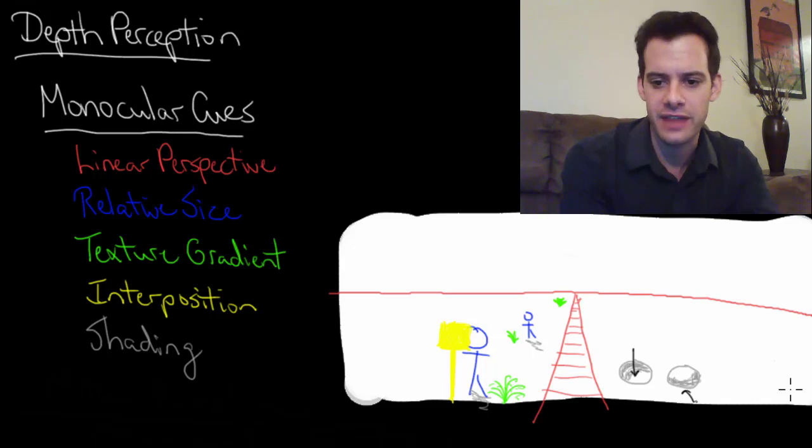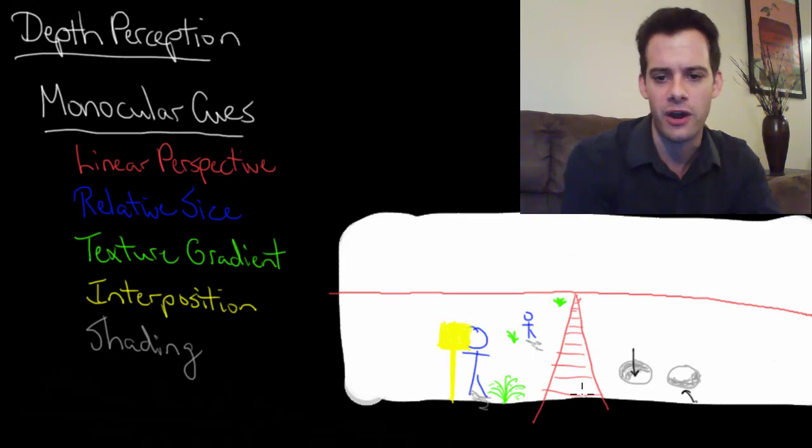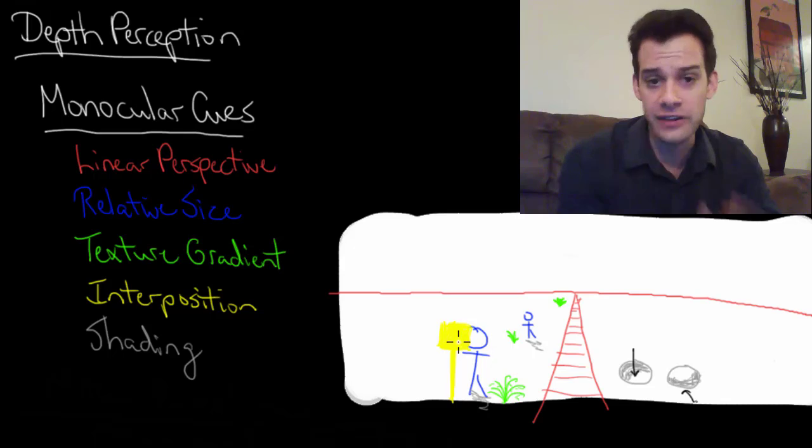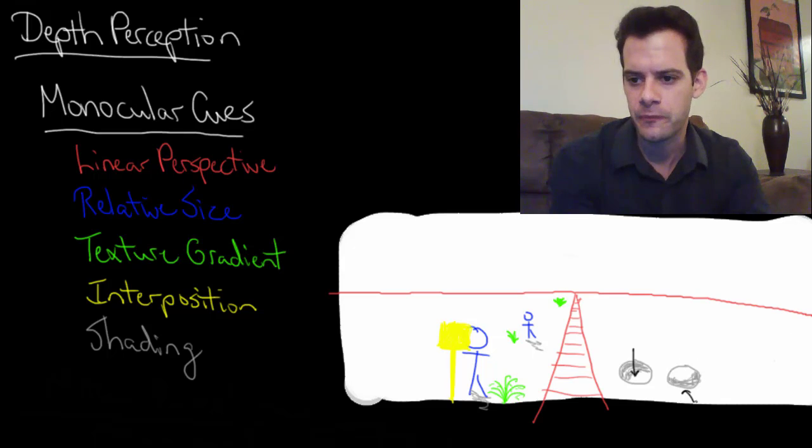So that's one way that we use shading. And again, as I said, you use this type of thing when you look at a flight of stairs. The way that the shadows fall on the steps tell you which part is a step, which part is the vertical part, which part is a horizontal part you can step on. And you do that unconsciously, without even thinking about it. You just see the stairs and you immediately know how to walk up them.